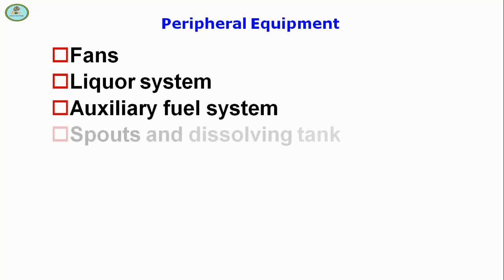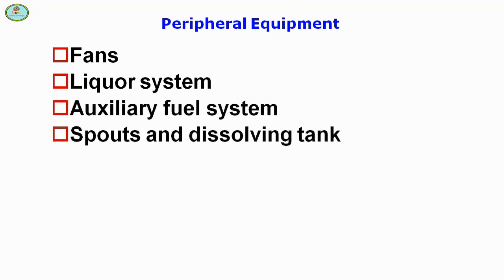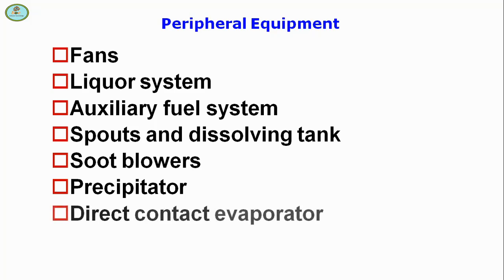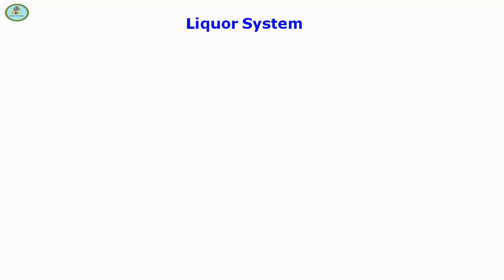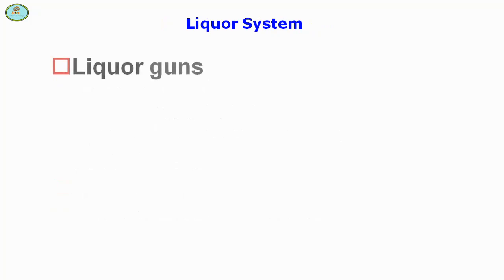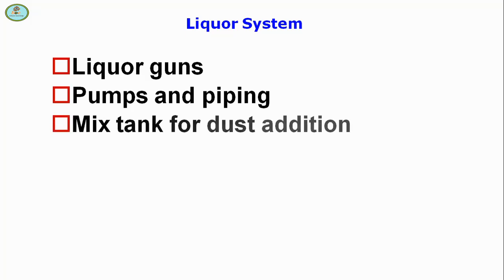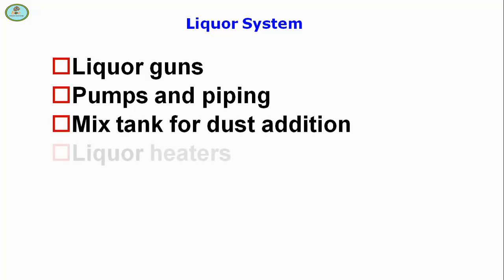Peripheral equipment includes spouts and dissolving tank, fuel tank, soot blowers, and precipitator. The liquor system includes liquid guns, pumps and piping, a mix tank for dust addition, and liquid heaters, along with solids monitoring and automatic diverting systems.